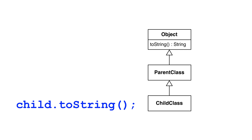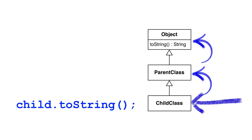The way Java class inheritance works is, when we call a method in Java, Java will look in our current class for the method. If it's not there, it will look in the parent class for the method. It will keep doing this until it finds the method to execute. If the method doesn't exist, it won't compile.